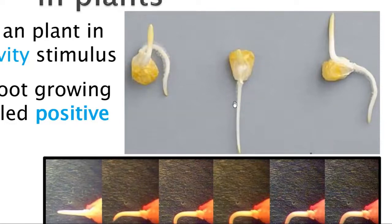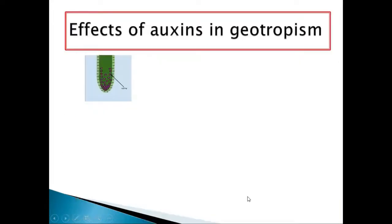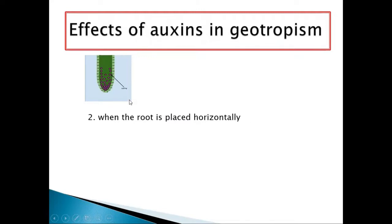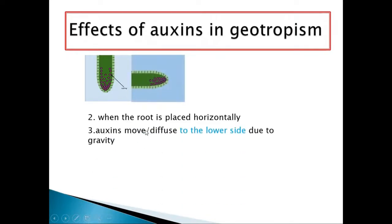So what is the effect of auxins on geotropism? When the root is placed horizontally, auxins move or diffuse to the lower side due to gravity. The upper side will have less auxins and the lower side will have more auxins. But remember, auxins inhibit growth in the case of roots — they slow down growth.